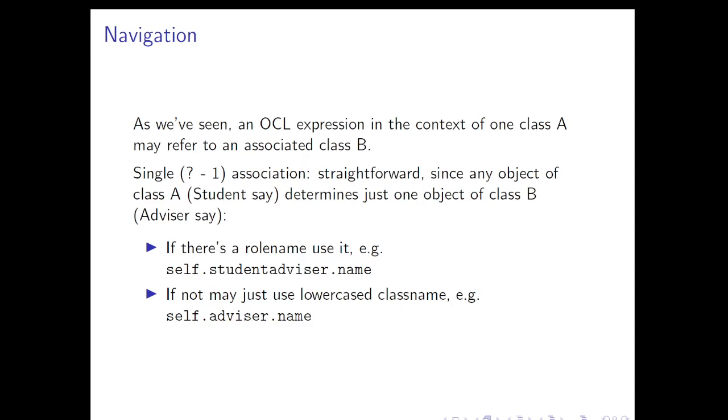We've seen already that an OCL expression in the context of one class A may refer to an associated class B. If we have a single association, a something to one, then it's straightforward. We just use the dot notation and there's only one thing it can possibly mean. So suppose we have an association between a class Student and a class Advisor, which indicates that the student is advised by this particular advisor. Now, there might be a role name on the advisor end of that association, perhaps it might be studentAdvisor, and then we'll use that. We can hop a couple of times around the diagram if we like, so we can go self.studentAdvisor.name. If you are the student concerned, then what that evaluates to is the name of your student advisor, who is, let's say, uniquely determined if you only have one student advisor.